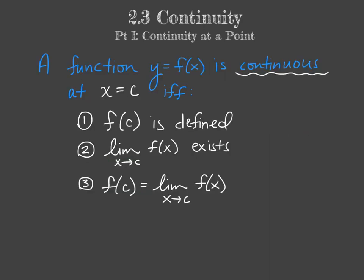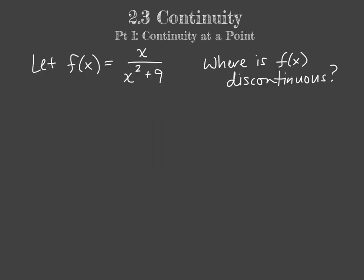The moral of the story is: we learned today what continuity at a point means. We have a checklist of three conditions when working graphically, and when working algebraically, to find points of discontinuity we find where our function is undefined — where the denominator equals zero, or where that specific trigonometric function is undefined. This is our last example in this video.